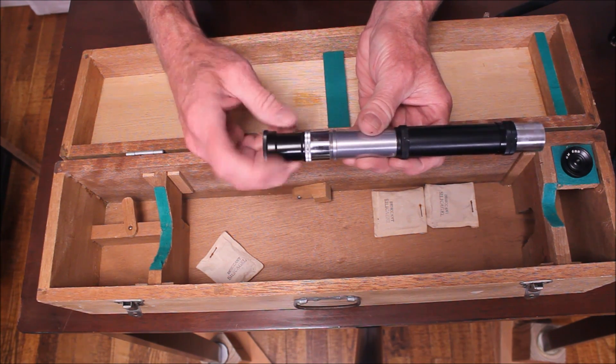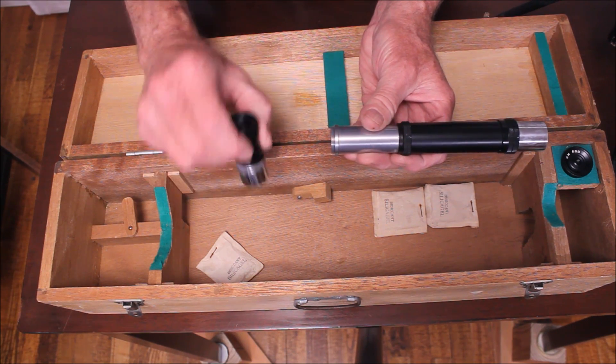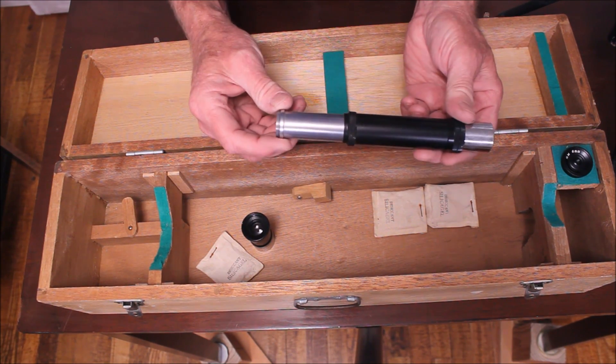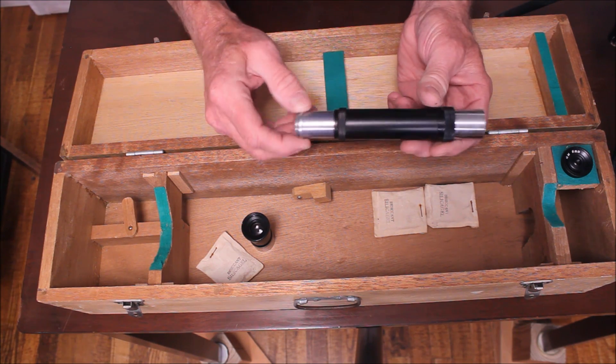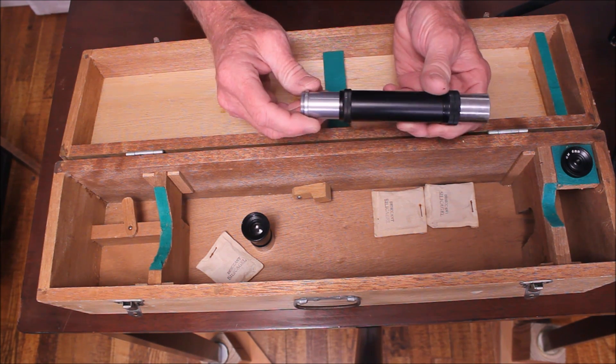This eyepiece does detach, so you could presumably use the other eyepiece with that if you wanted to, although it would probably be way too much power for this little telescope.